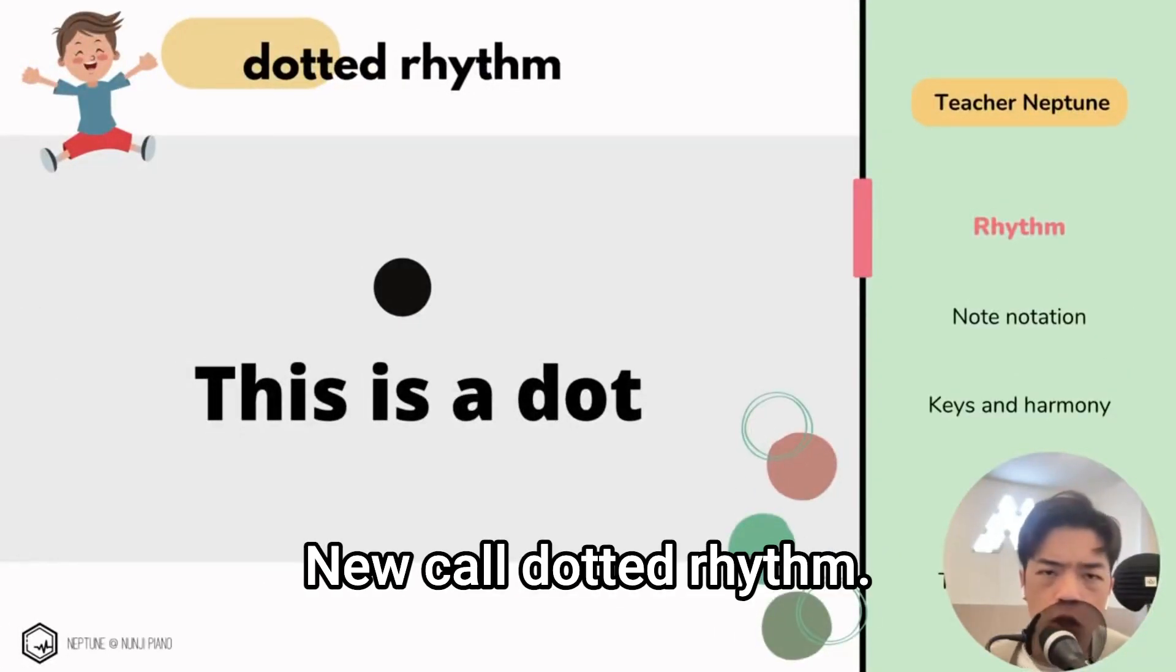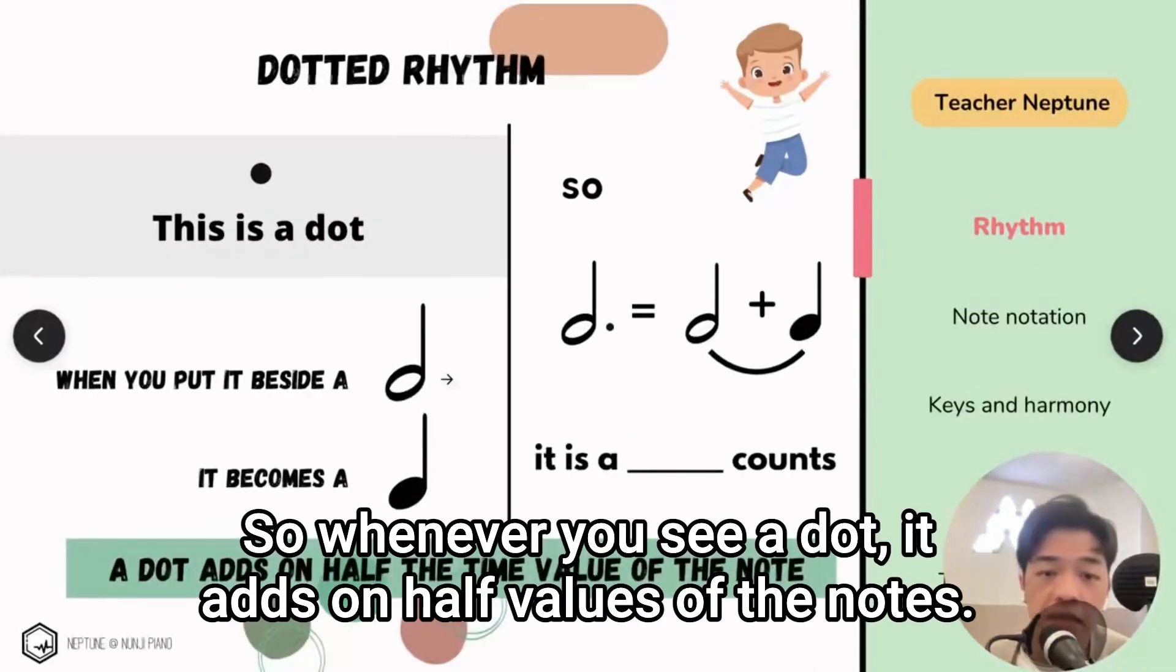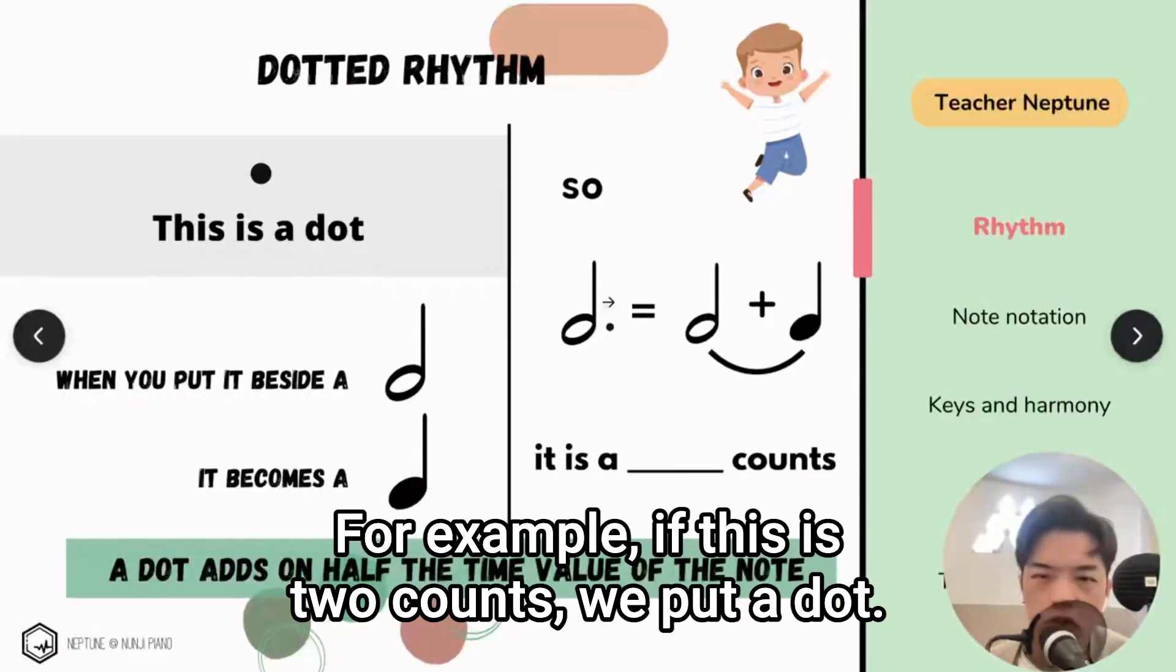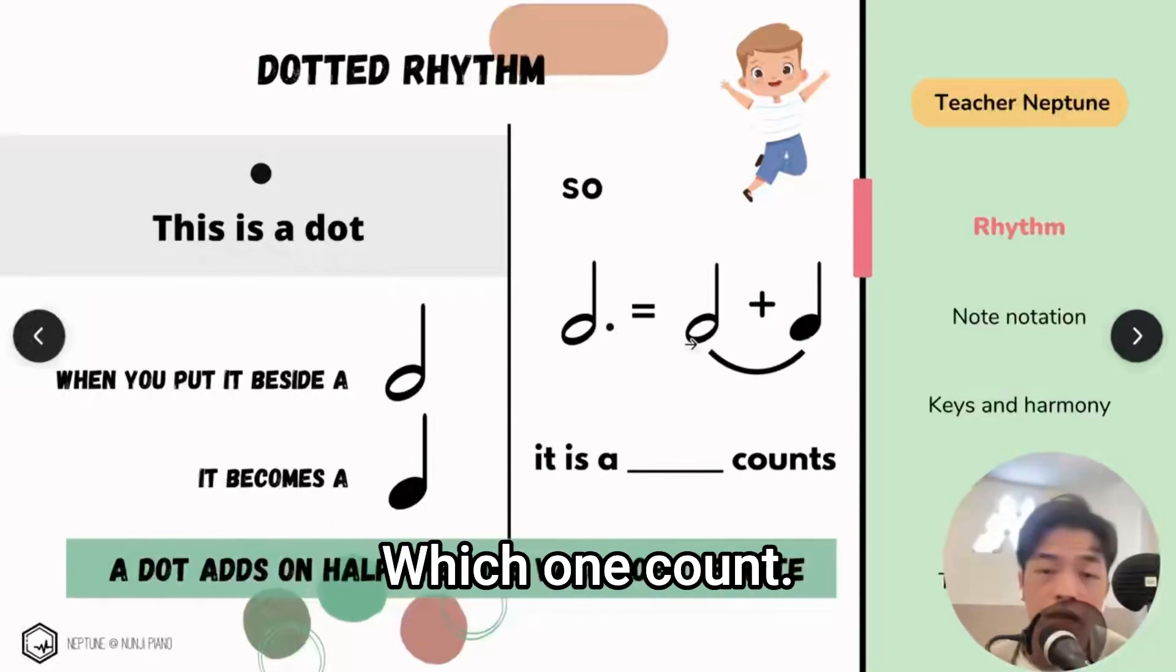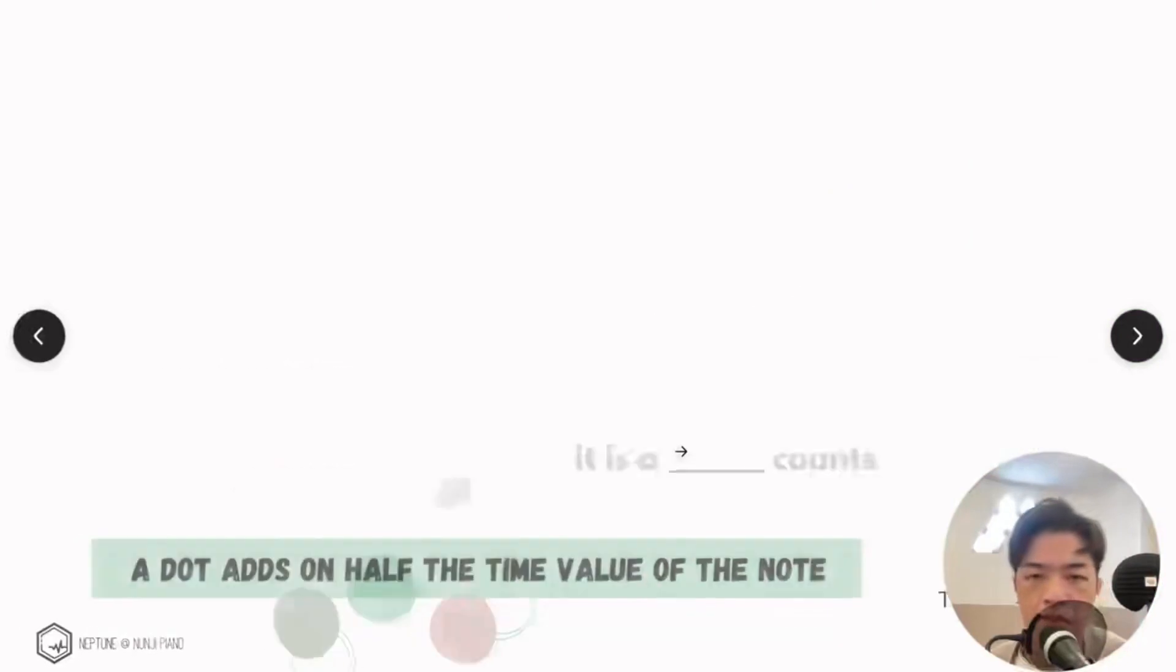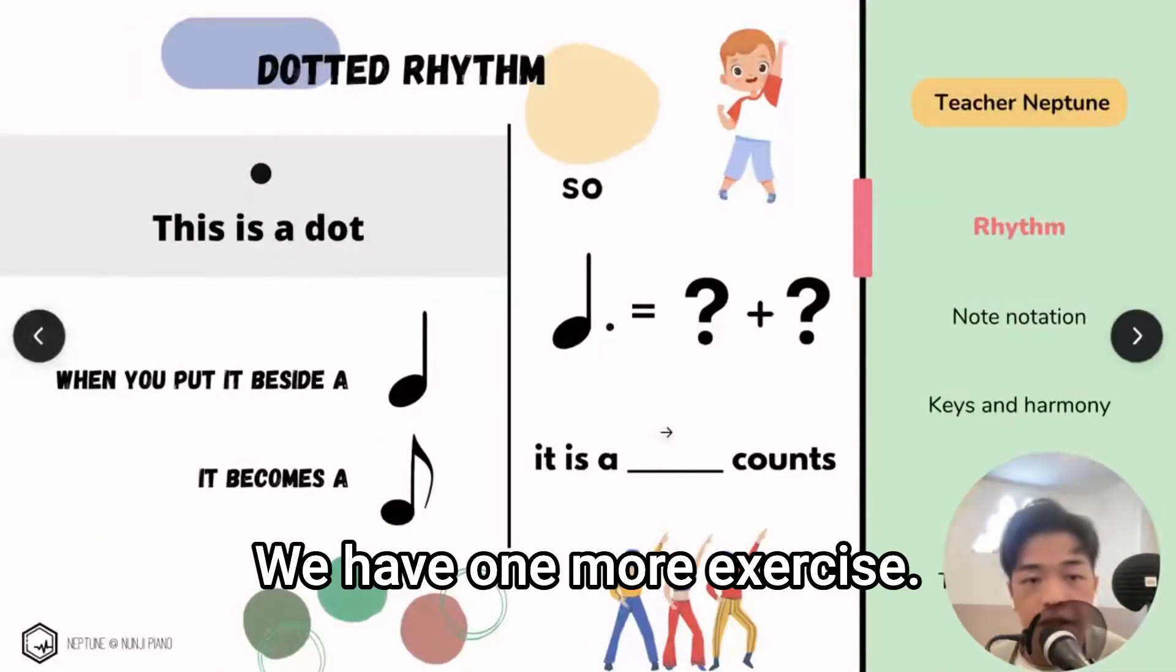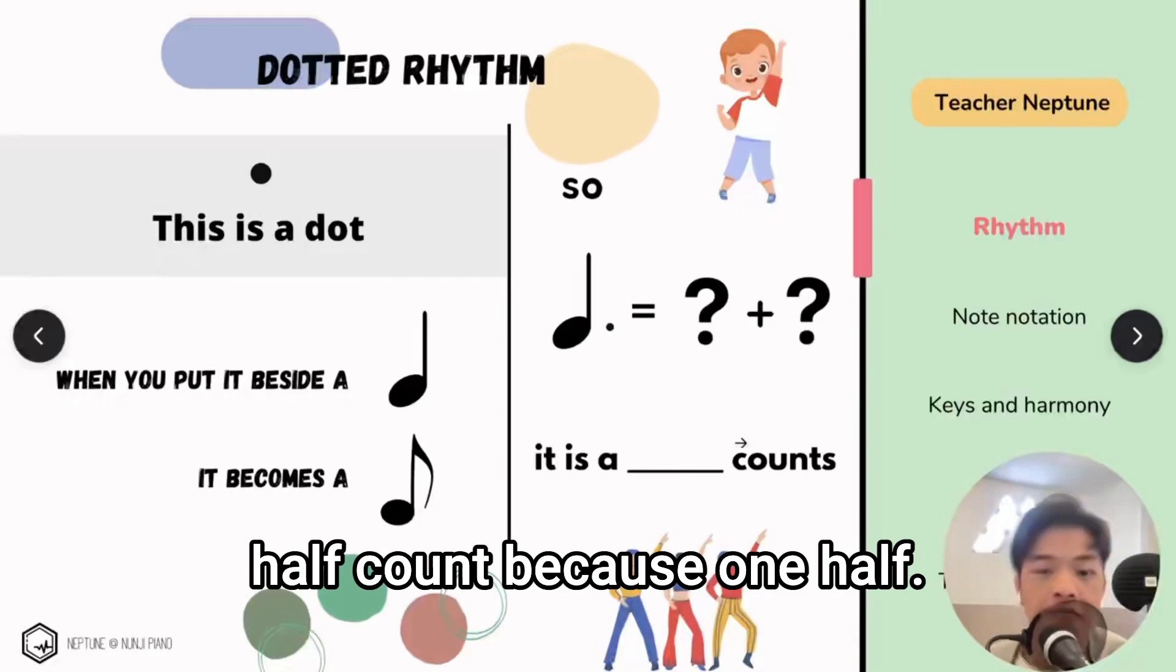We are learning something new called dot rhythm. This is a dot. So whenever you see a dot, this adds on a half value of the note. For example, if this is two counts, we put a dot. Half value of two counts is one count, so two plus one, this is three counts. We have one more exercise. If we put a dot beside a one count, it becomes one and a half counts.